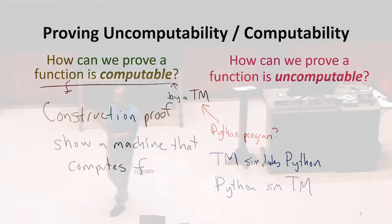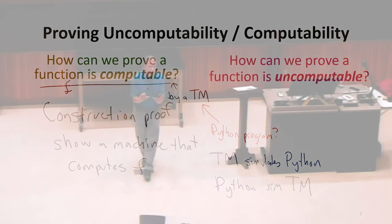At least in our idealized version of Python, we could do both. That would show that they're equivalent. But if our goal is to show something is computable, we just need the one direction. If your goal is to show something is computable, and you say, well,